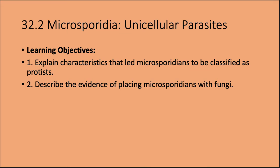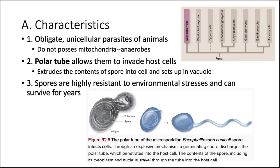Moving on to Microsporidia — unicellular parasites. We'll discuss characteristics that led them to be classified as protists, and then evidence placing them with fungi. These organisms are obligate unicellular parasites of animals — 'obligate' meaning they need their host. They do not possess mitochondria, so they are anaerobic. One distinct feature is a structure called the polar tube, which allows them to invade host cells.